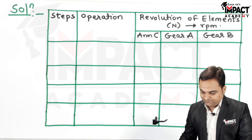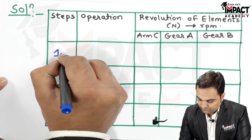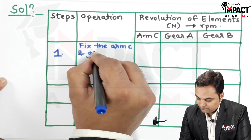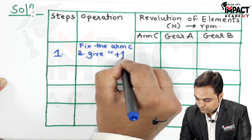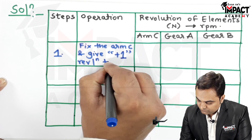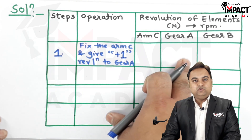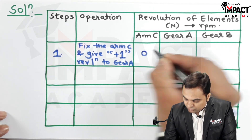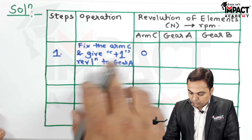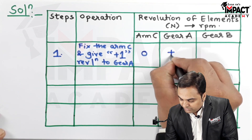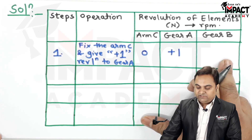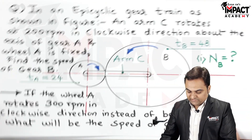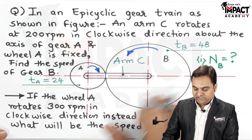The first step is to fix arm C and give plus one revolution to gear A. Since the arm is fixed, its RPM is zero. We provide plus one revolution to gear A, then we need to find the speed of gear B. Here, A is the driving gear and B is the driven gear.